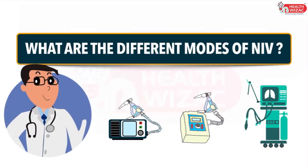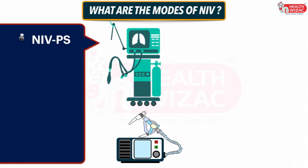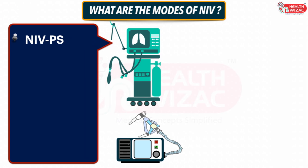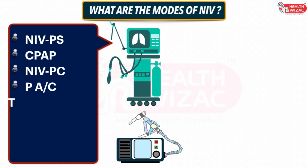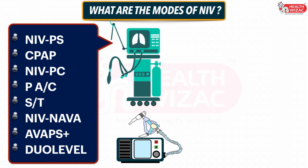What are the different modes of NIV? If a ventilator is used for non-invasive ventilation, we may see the following modes: NIV-PS mode (NIV Pressure Support mode), CPAP mode (Continuous Positive Airway Pressure mode), NIV-PC mode (NIV Pressure Control mode), PAC mode (Pressure Assist Control mode), ST mode (Spontaneous Time Cycle mode), NIV-NAVA (Neurally Adjusted Ventilatory Assist mode), AVAPS Plus mode (Average Volume Assured Pressure Support mode), and DUO level mode — where some advanced modes are present in specific ventilators only.